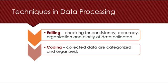Next, we have coding. It's a process wherein the collected data are categorized and organized. Coding is done to assign numerical values to specific indicators, especially those that are abstract or qualitative in nature — something that cannot be quantified by nature. For example, gender: if you are going to use gender in your analysis, you need to assign numerical values, such as 1 for male and 2 for female. Similarly, for employment status, you can use 0 for unemployed, 1 for government employee, or 2 for private employee.